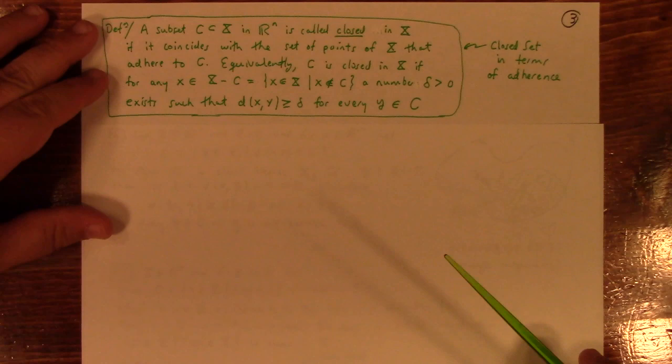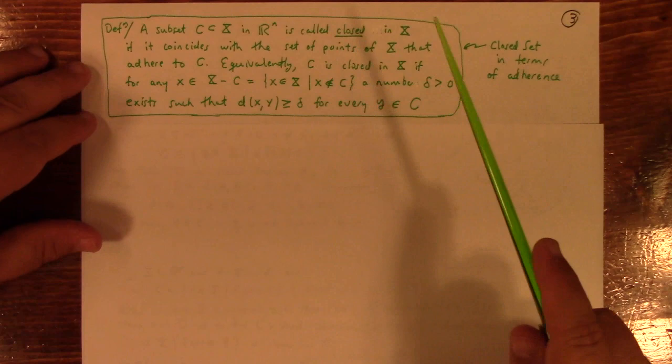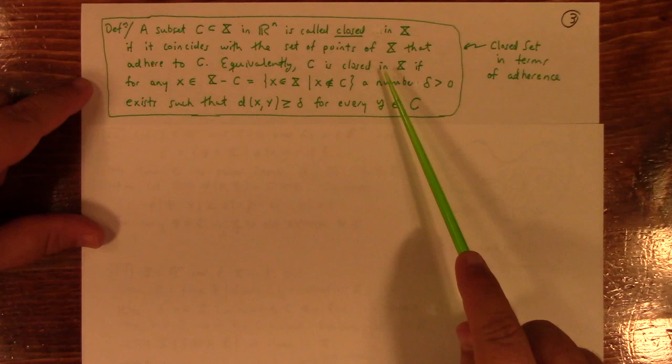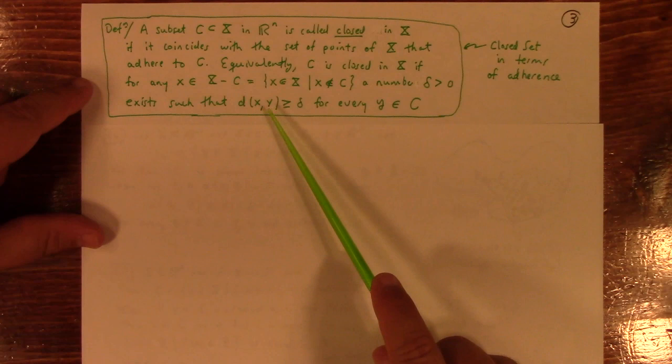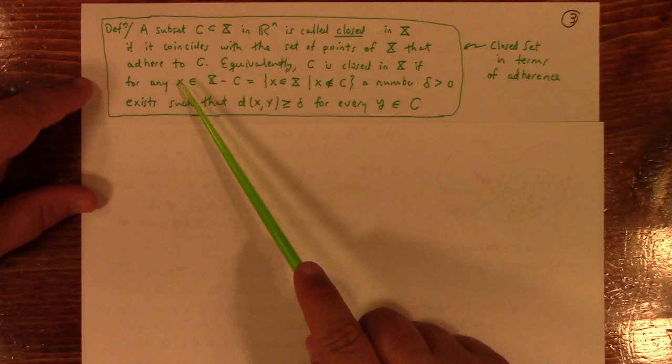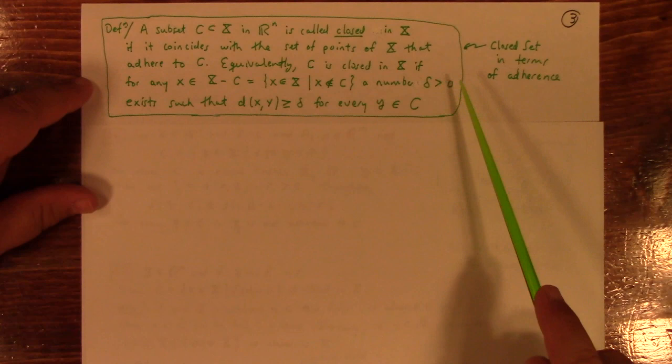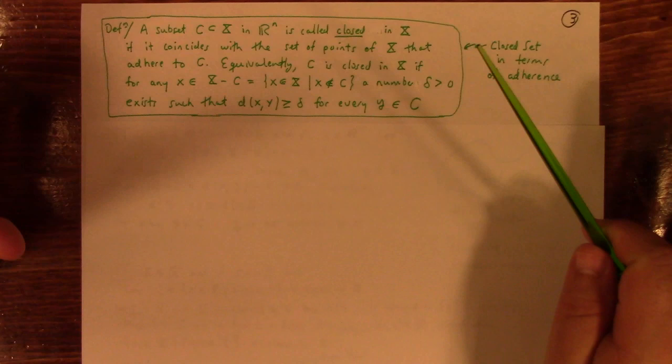Next, Minetti talks about a subset being closed if it coincides with a set of points that adhere to the set. So, closed points have all the points which are stuck to the set. Equivalently, C is closed in X if for any X in the complement of X by C, there exists a delta greater than 0 such that the distance from X to Y is greater than delta for every Y in C. In other words, you can always separate a point outside C from C by picking a sufficiently well-chosen delta.